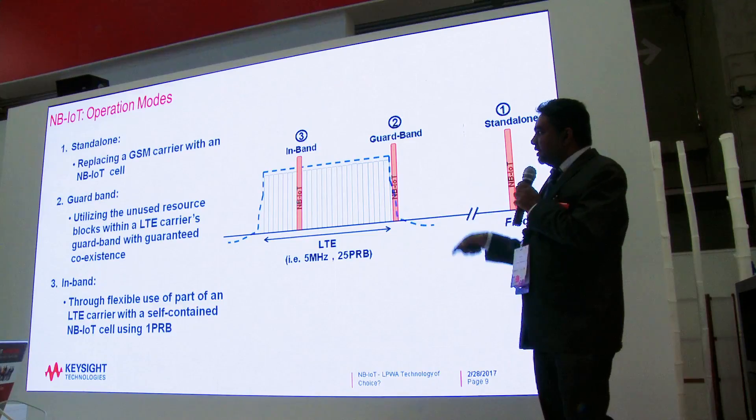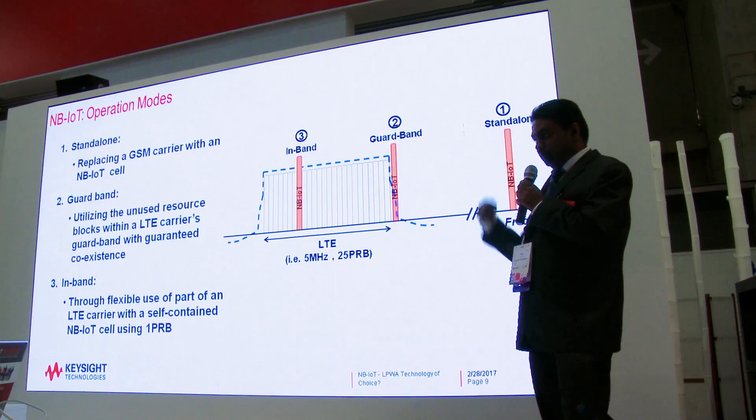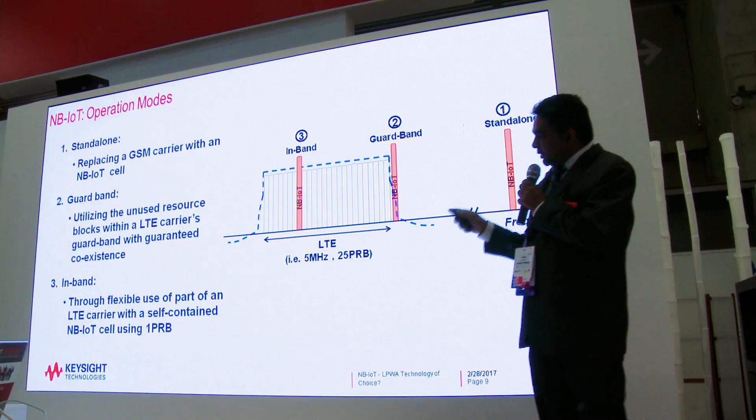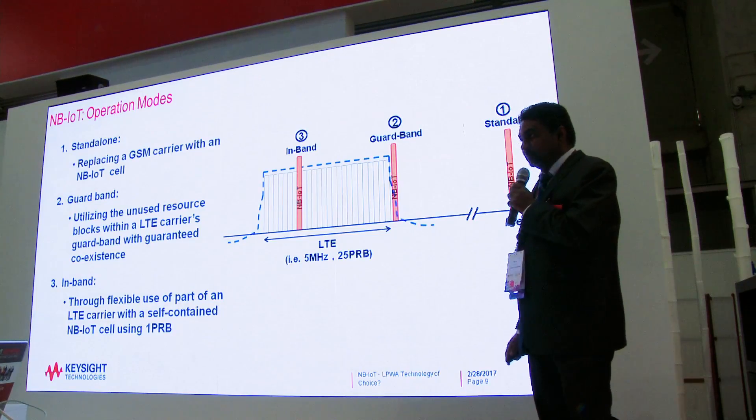The second mode is guard band, which is the least popular of the three — it utilizes unused spectrum at the guard band to deploy NB-IoT. The third mode is in-band, which is the most popular and widely deployed by many operators. In-band mode takes one chunk of LTE spectrum to deploy NB-IoT without any disruption to LTE services. Keysight's UXM test set provides solutions for all three operating modes, and all three are being demonstrated today with different chipsets and devices.